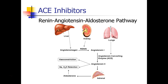Before we go any further, it's worthwhile to review the renin-angiotensin-aldosterone pathway and all of the components. It begins with angiotensinogen, which is synthesized in the liver, and that compound is converted into angiotensin-1 by means of renin, and renin is secreted from the kidney. Angiotensin-1 then goes to the lungs, where it's converted to angiotensin-2, and that's facilitated by angiotensin-converting enzyme, or ACE.